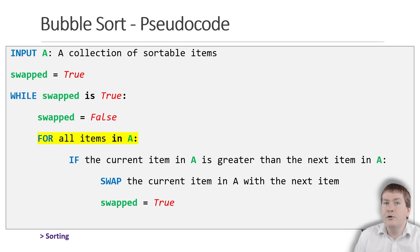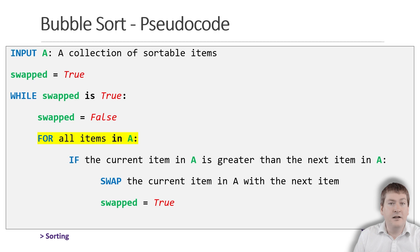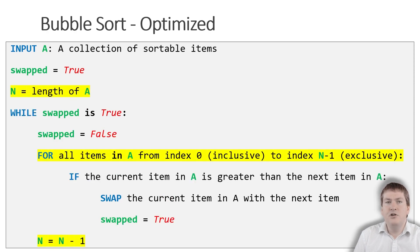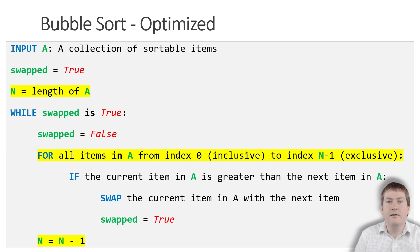Now I did mention that this algorithm could be improved or optimized. We waste a lot of time checking values that we already know are in the correct location at the end of the list. To improve this, we can simply reduce the number of elements the for loop runs through each iteration. As we know, after each iteration of the list, another item is placed in the correct spot at the end. So we shouldn't have to check those items again. A few changes are needed to implement this. First, we need to track how many times we run through the for loop, and we'll do that with the variable n. n starts as the length of the list and we reduce its value by one each time we iterate through the while loop.